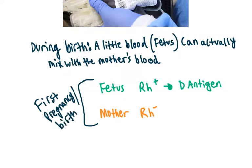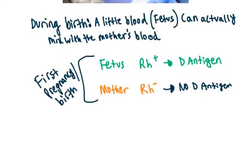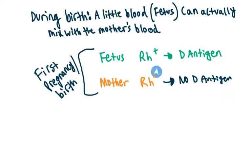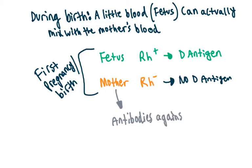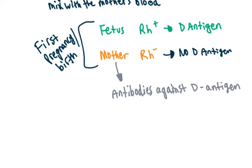If the mother is RH negative, that means she does not have the D antigen. So what happens is the mother becomes pregnant and she gives birth, and a little blood from the fetus mixes in with the mother's blood. Because she doesn't have the D antigen, she's going to start making antibodies against the D antigen she received from the baby's blood. So now the mother has made antibodies against the D antigen.